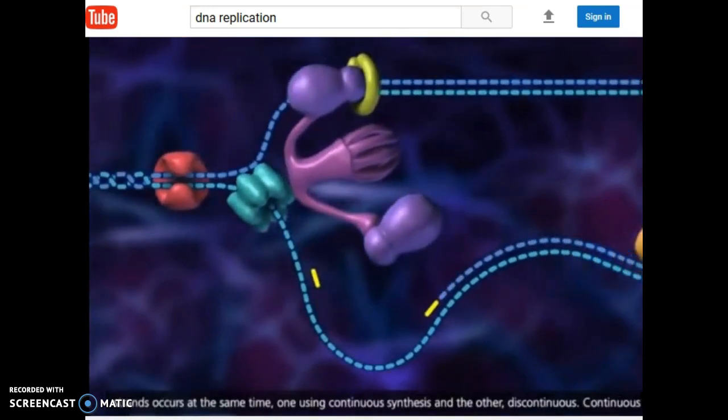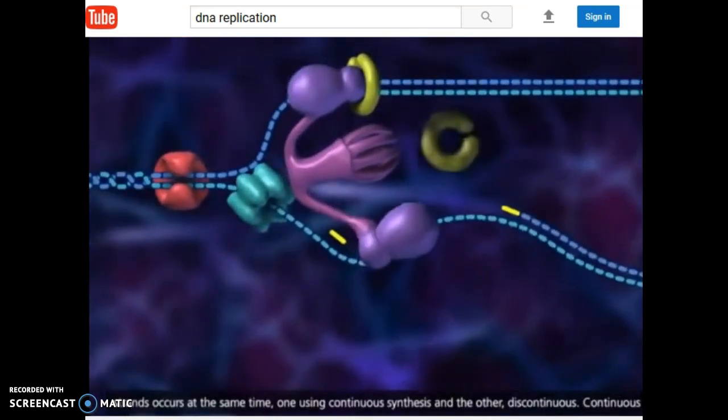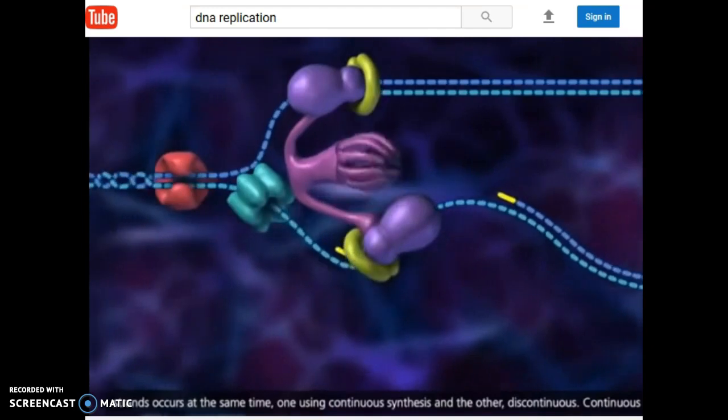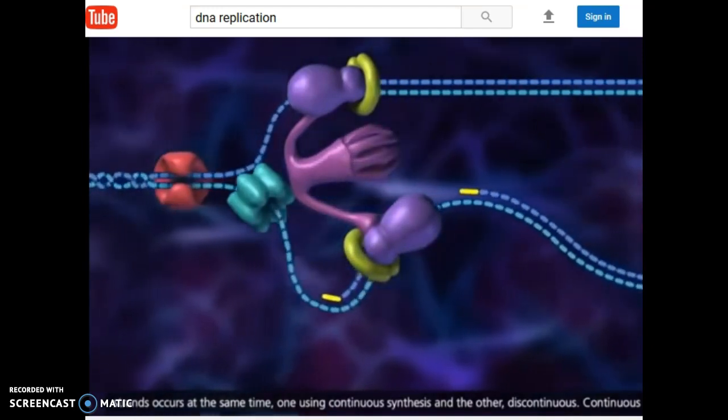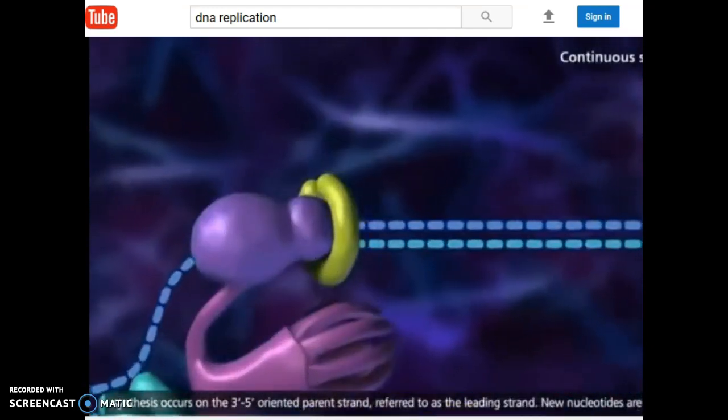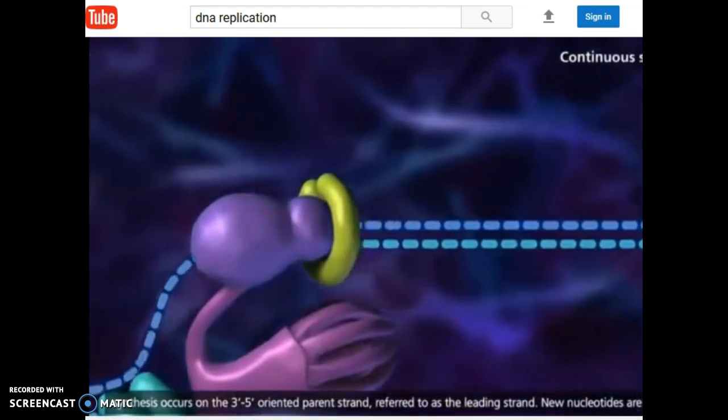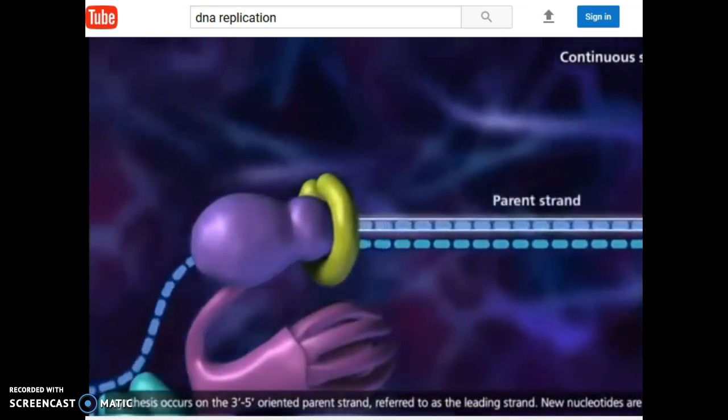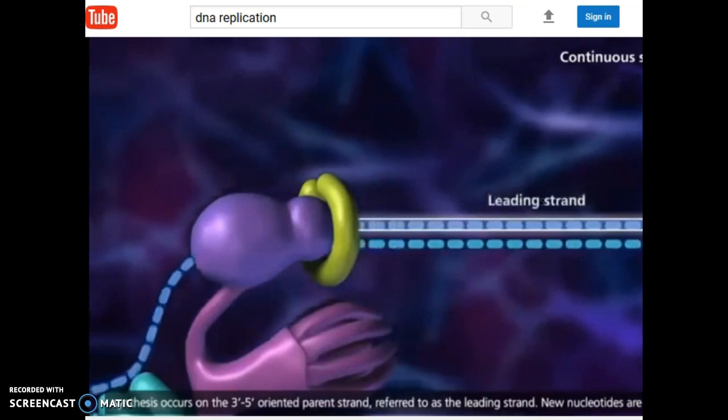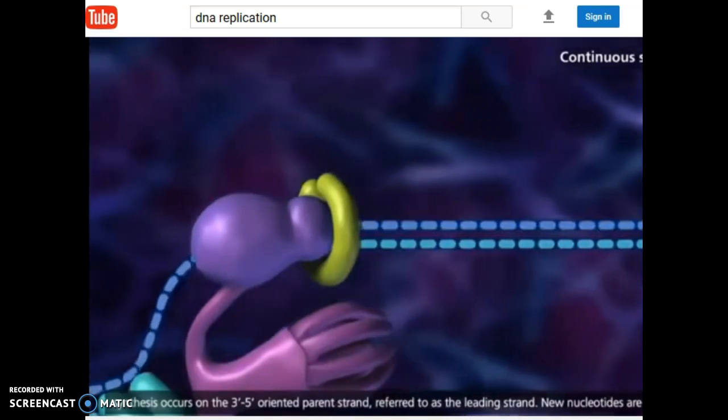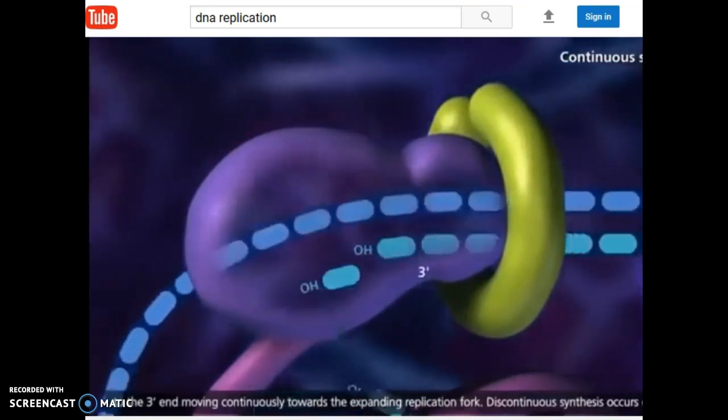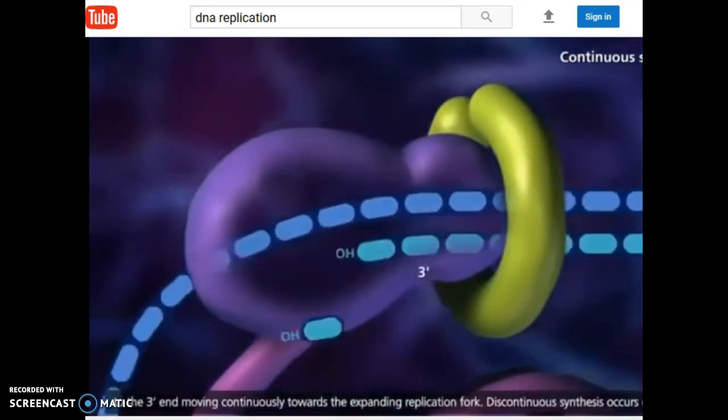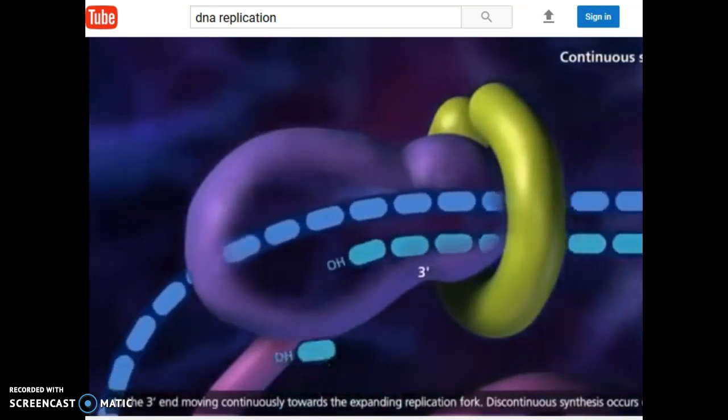Replication of both strands occurs at the same time, one using continuous synthesis and the other discontinuous. Continuous synthesis occurs on the three prime to five prime oriented parent strand, referred to as the leading strand. New nucleotides are added to the three prime end, moving continuously toward the expanding replication fork.